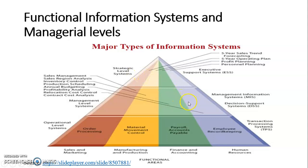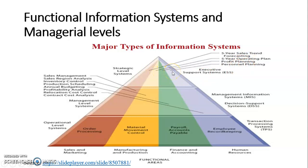At the management level there are information systems such as sales management, sales region tracking, and inventory control — all types of information based on different business functions. At the executive level there are systems for sales trends, five-year operational plans, profit planning, and personnel planning. This diagram provides a clear idea about how management levels and information systems are integrated.